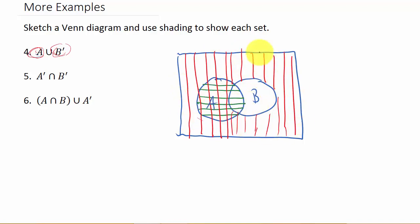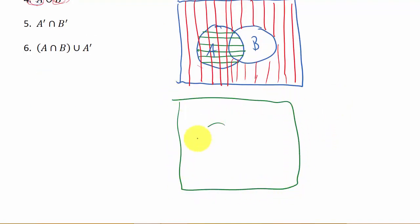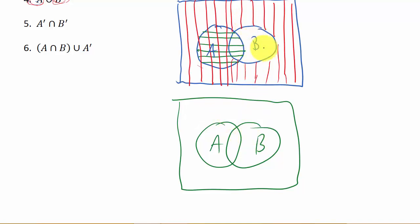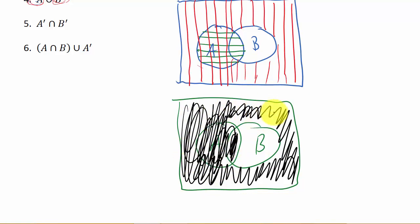The only part that would not get shaded is this small region inside B but outside A. You can draw the two sets again cleanly and quickly shade in what's supposed to be shaded — everything but that one part. Or you can shade it solid. Either way, that's your final answer for this one.